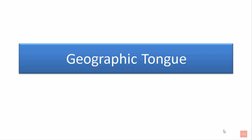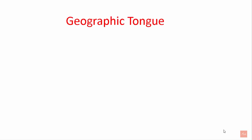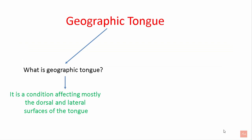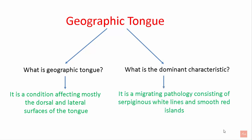Welcome back to MediClass. Today we shall learn about Geographic Tongue. It is a condition affecting mostly the dorsal and lateral surfaces of the tongue. The dominant characteristic is that it is a migrating pathology consisting of serpiginous white lines and smooth red islands.